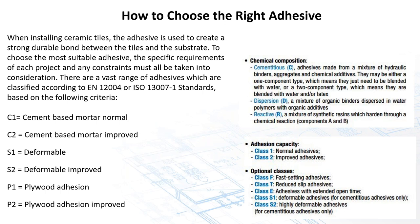In terms of how to choose the proper adhesive, one feature unique to ISO — not yet in ANSI — is the deformable (S1) and highly deformable improved (S2) classifications. Manufacturers like Mapei that list both ISO and ANSI designations on their packaging make it easier for specifiers to find mortars with the flexibility needed for demanding applications. Pay attention to these ISO designations on packaging when flexibility is critical.